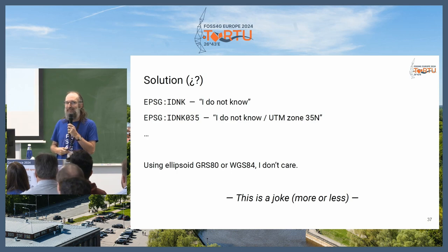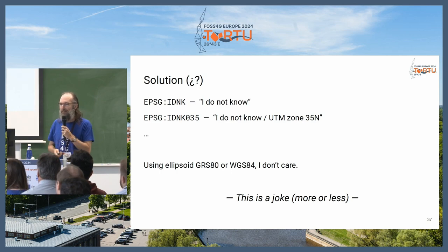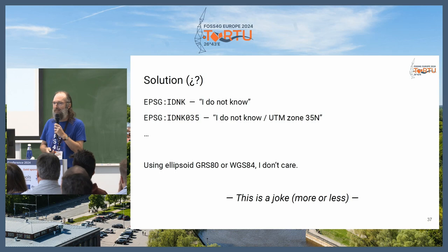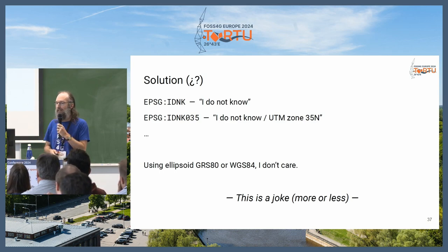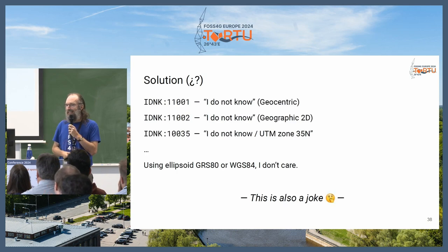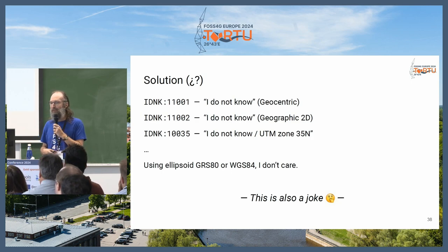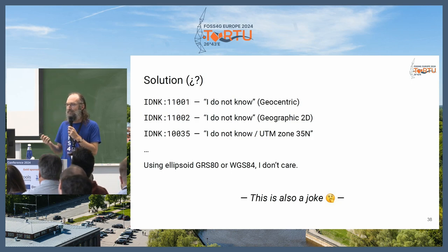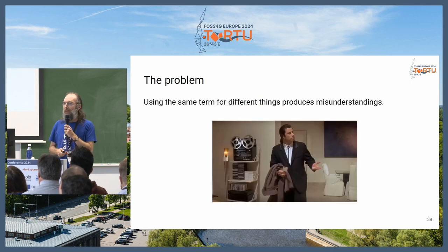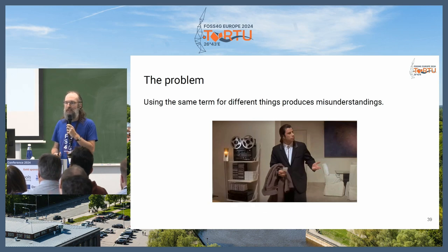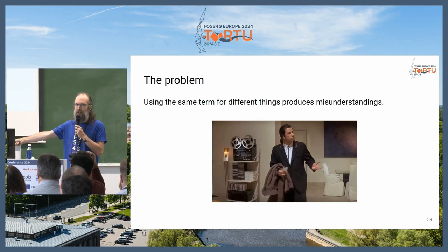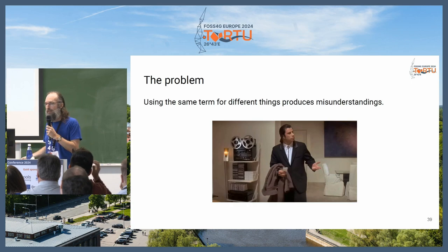Solutions — well, maybe we're going to ask EPSG to add entries. One geographic, some projections, to make many people happy. This is a joke. Also a joke: making our own authority with numbers so people are happy with integer values. My opinion: the problem is that we are using the same term for different things, and that always produces misunderstanding. So maybe WGS84 means something to me, but I give the data to somebody else and that person understands something else.